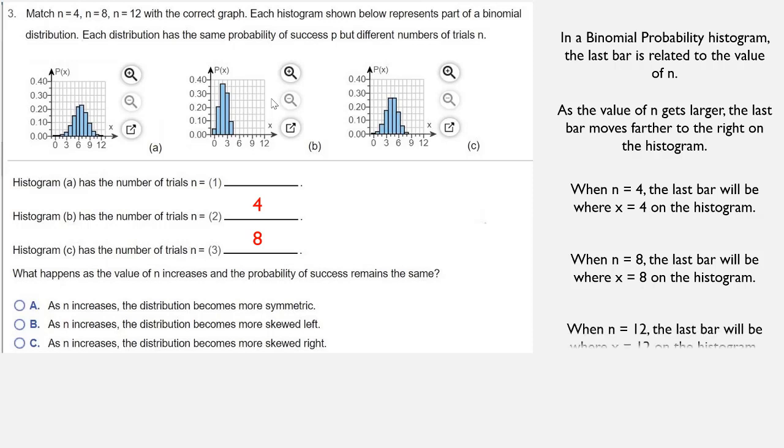When n is equal to 12, the last bar will be where x equals 12 on the histogram, which is on histogram A.